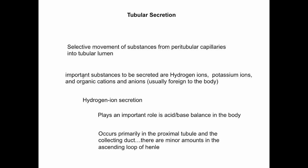The three key substances we secrete include hydrogen ions — hydrogen ion secretion is an important process in regulating body pH. Potassium ions get secreted, which controls body potassium levels. And there's a large category of substances called organic cations and anions, which are usually foreign to the body — things like drugs we consume and environmental pollutants. These all get secreted.